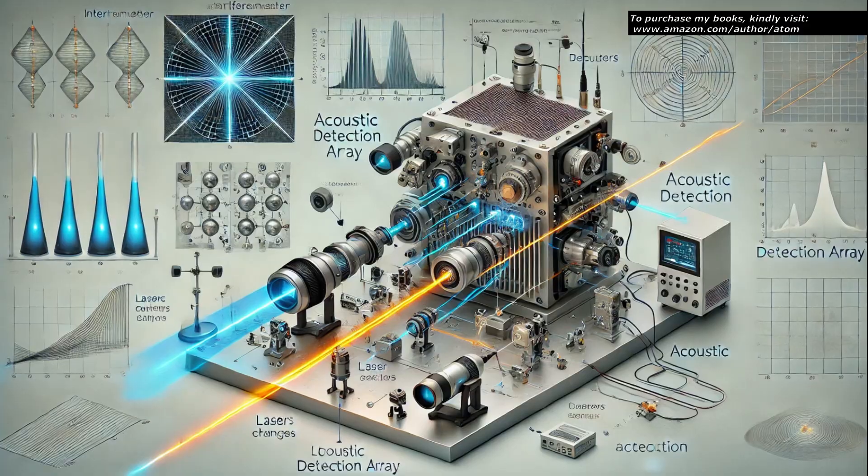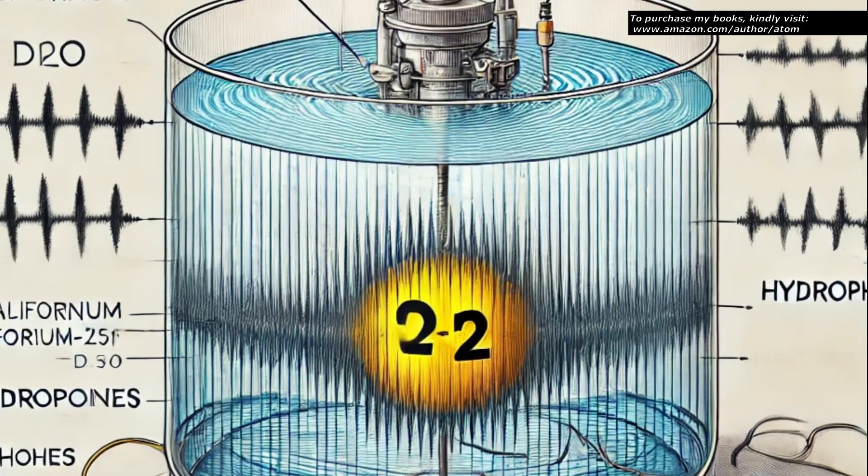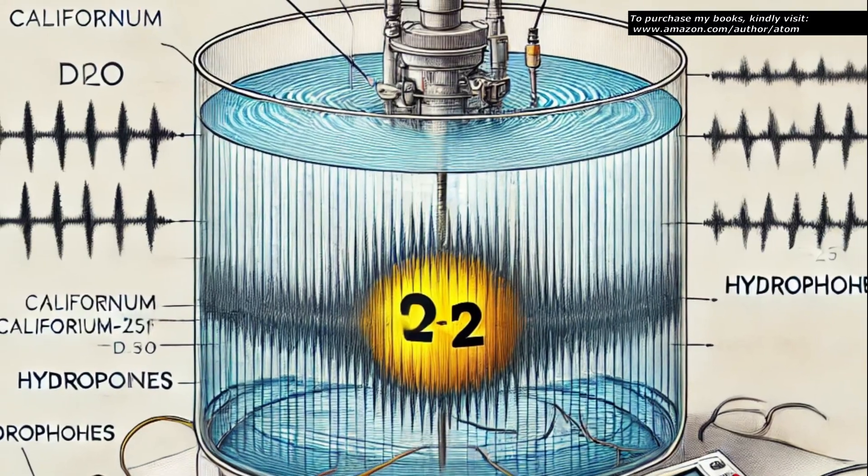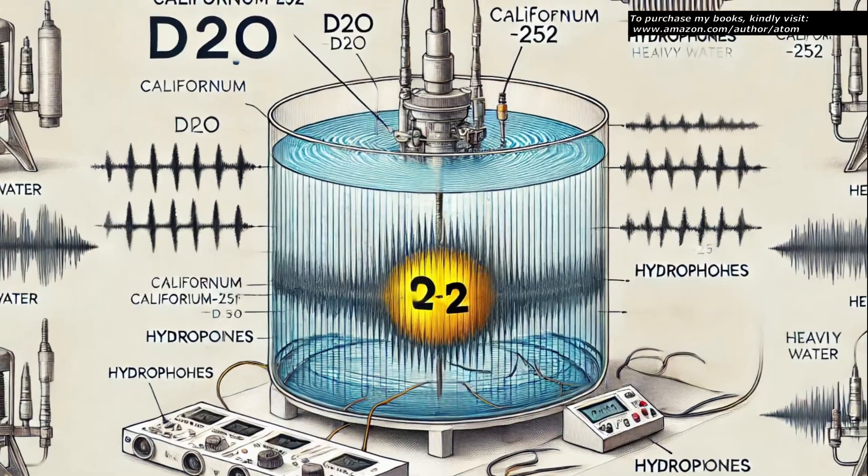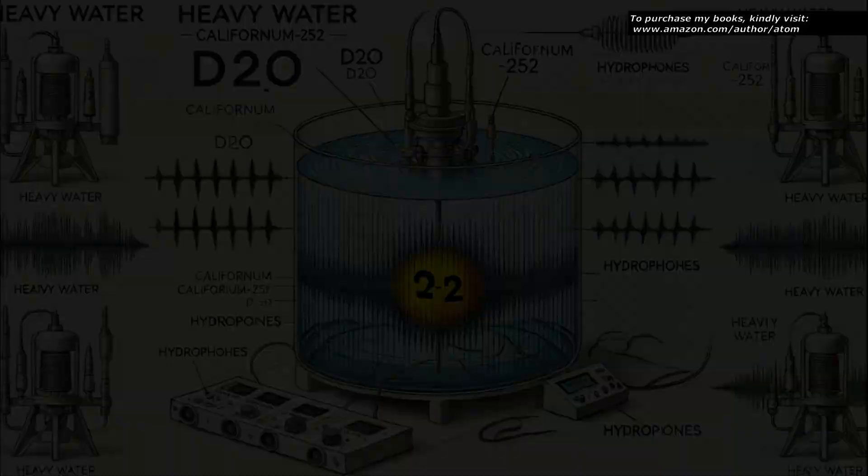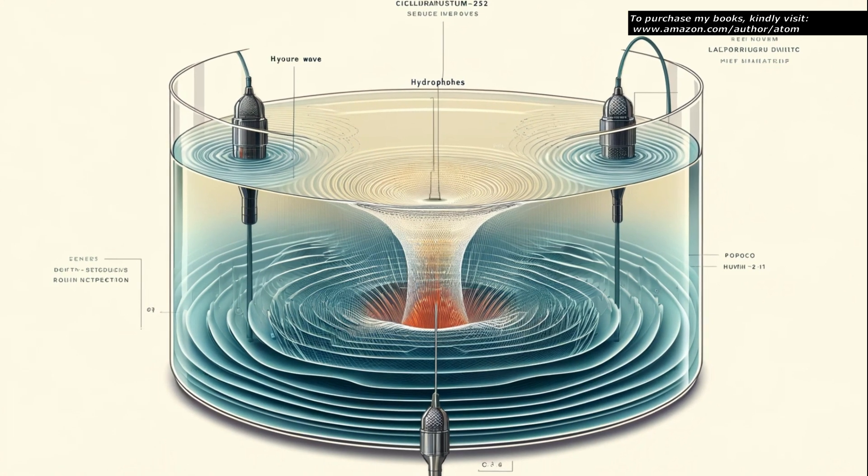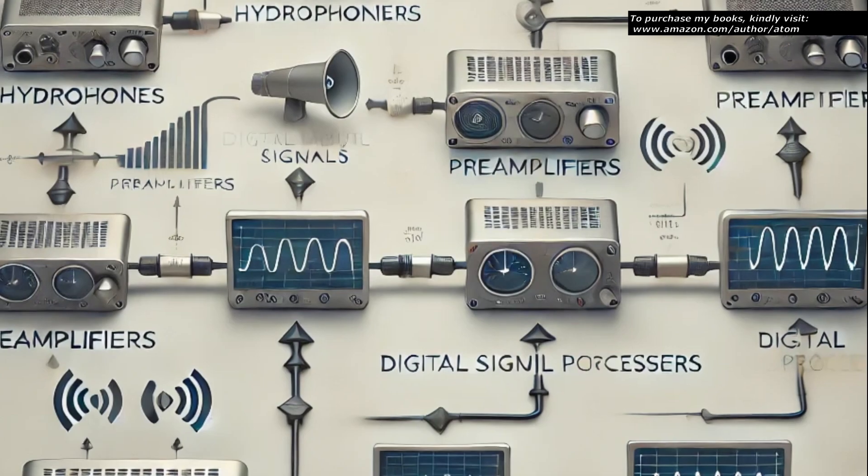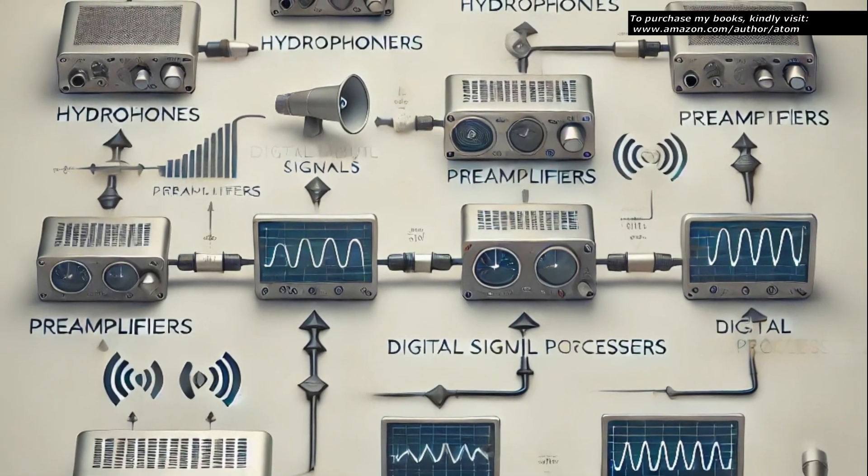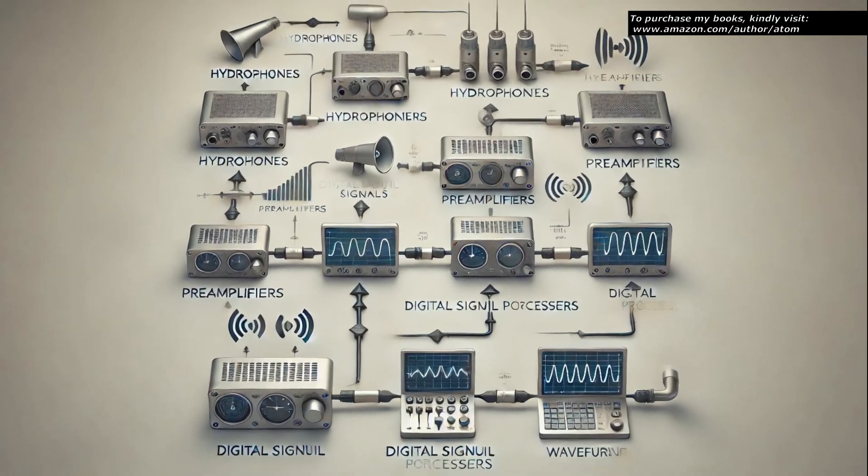Complementing the interferometry is the ultra-sensitive acoustic detection system. An array of hydrophones, which are specialized underwater microphones, is strategically placed around the CF-252 source within the heavy water. These hydrophones are designed to detect low-amplitude pressure variations that could indicate the presence of shock waves. They are connected to low-noise preamplifiers and digital signal processors that filter and analyze the acoustic signals.